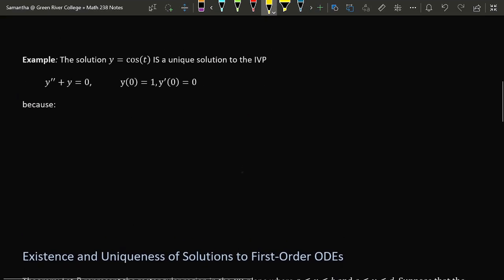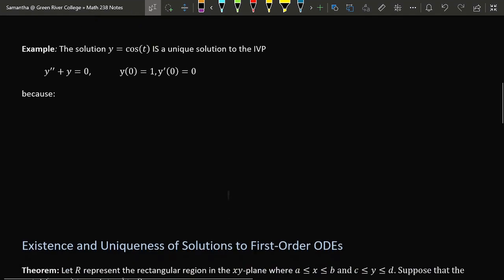Now suppose instead of having just the differential equation, we also impose some restrictions that we require the solution to put out 1 when t is 0 and to output 0 when we plug 0 into the derivative. This time, cos(t) is a unique solution to this problem.